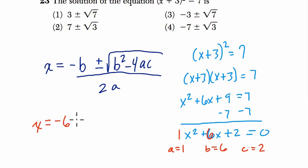x equals negative 6 plus or minus the square root: b squared is 36 minus 4 times a times c is simply just 4 times 1 times 2, which is minus 8, all over 2 times 1, or 2.